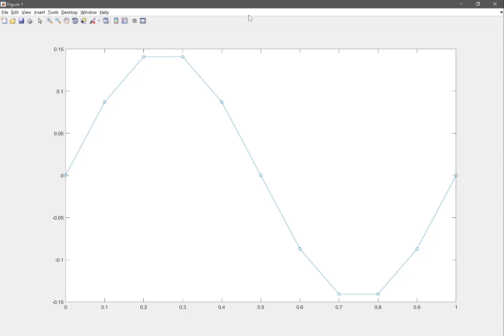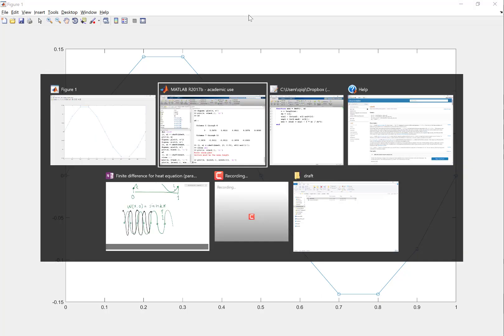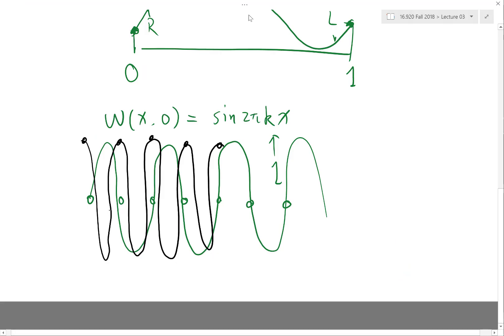Okay, so now let's compare this with the analytical solution. Do we still remember what's the rate of decay for the analytical solution? If you choose a function like this, we can easily do that again, right?